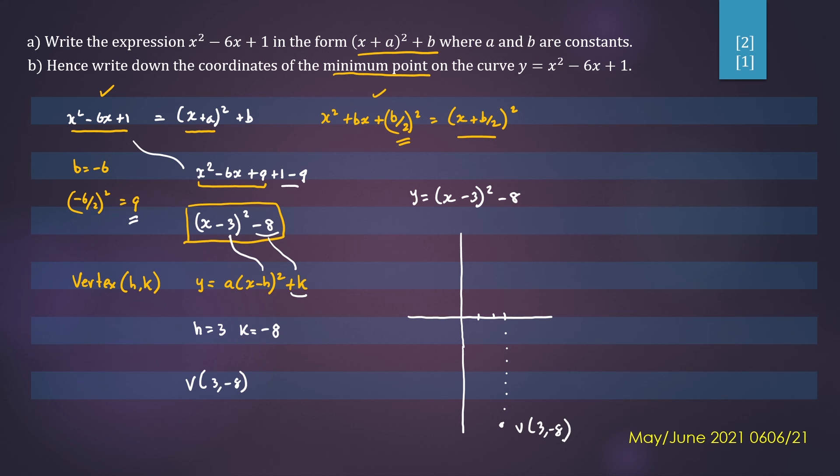If you want your y-intercept, that is this number here, 1. That's 1. So let's sketch our graph. We'll go from the vertex and go up through the y-intercept, which is there. And then we'll go up the other side like that.